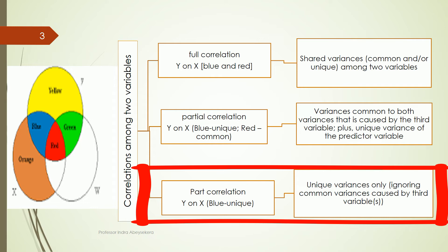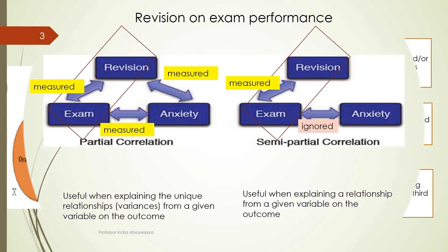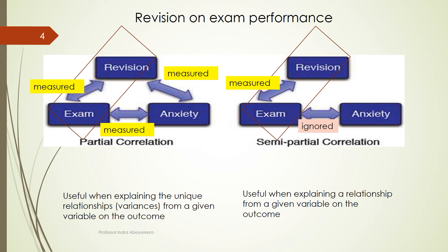Part correlation, which is where semi-partial correlation is applied in regression analysis, is where we look at the predictor's influence on the outcome — specifically the unique variance offered by the predictor variable. We can separate this because we know the common variances are caused by the third variable.